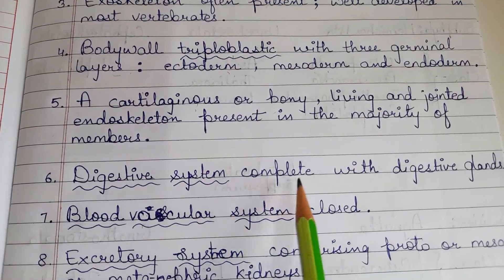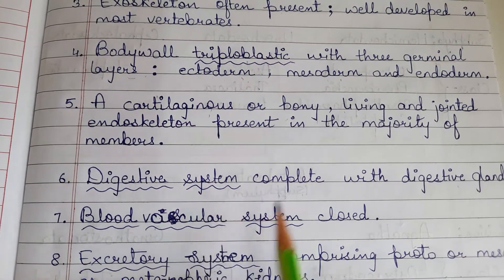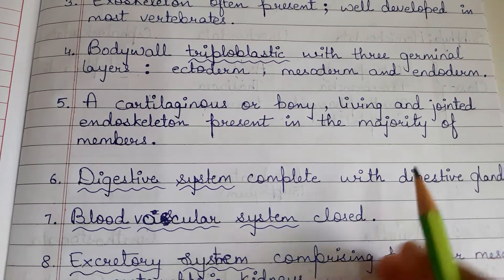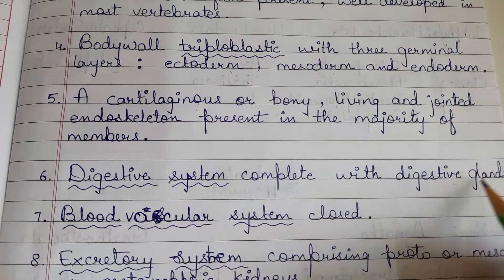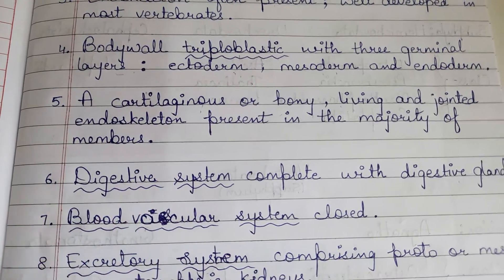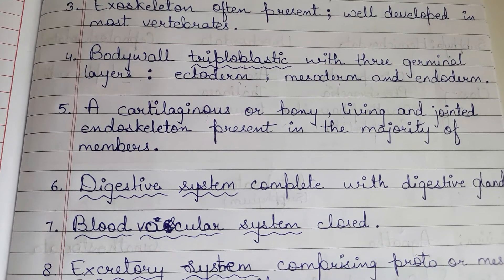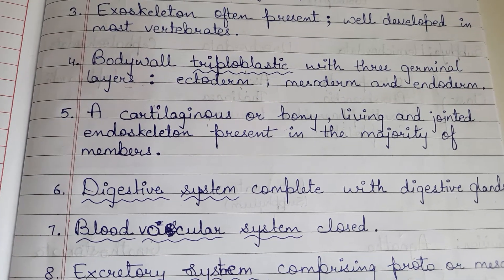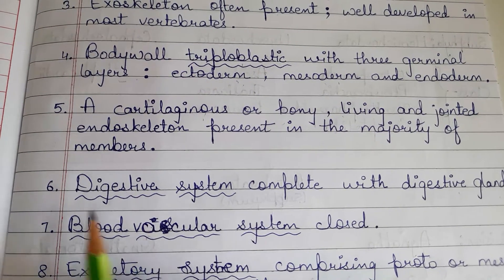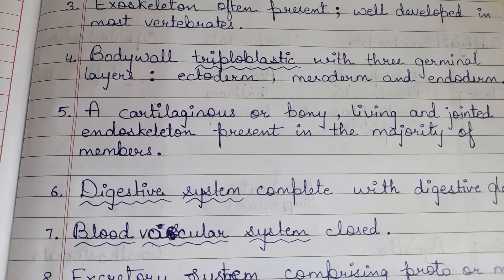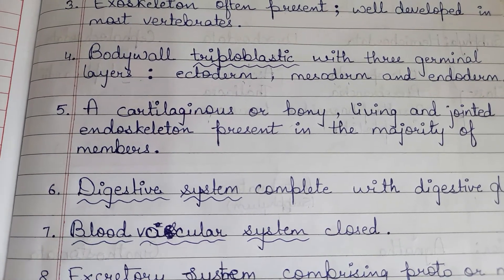Sixth characteristic: digestive system is complete with digestive glands. Members of Chordata have a complete digestive system — meaning digestive glands are also present. Like in humans, we have a complete digestive system with a full, closed alimentary canal, along with digestive juices and glands. And we ourselves belong to phylum Chordata.